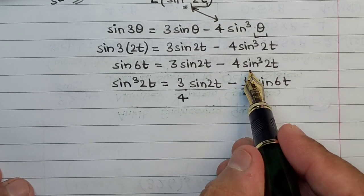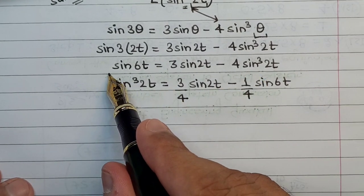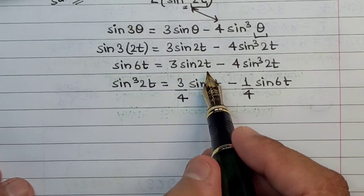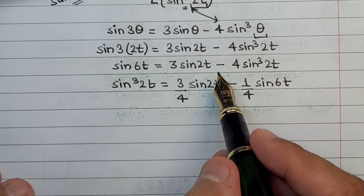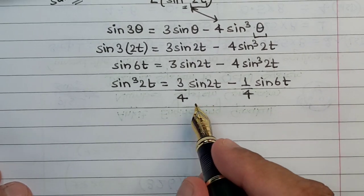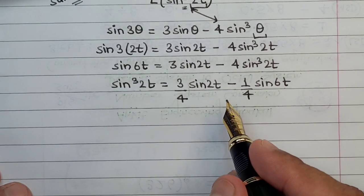What I've done is I've basically shifted 4 sine cube 2t on this side and sine 6t on this side, and then I've divided the entire part from the left hand side and the right hand side by 4. Here I have the value of sine cube 2t. Let us substitute this particular value in the required question.